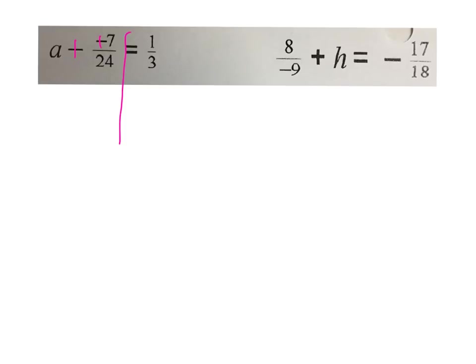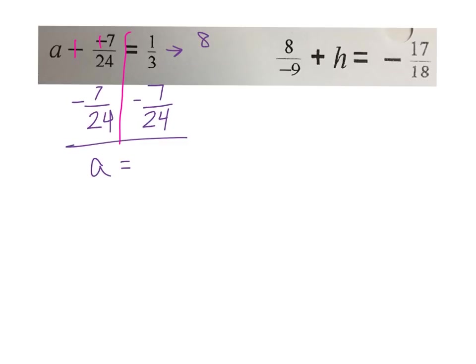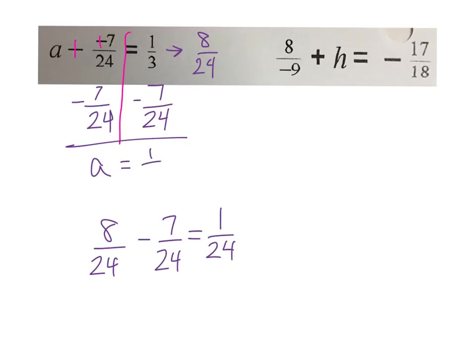Since I'm doing the opposite — the inverse — I'm going to subtract 7 twenty-fourths from both sides. On the left, I just get a leftover because the others cancel out. On the right, I have one third minus 7 twenty-fourths. I need to give them common denominators — I can change 3 into 24 by multiplying by 8, so I do the same to the top. This is really 8 twenty-fourths minus 7 twenty-fourths. 8 minus 7 gives me 1, my denominator stays the same, so a equals 1 twenty-fourth.